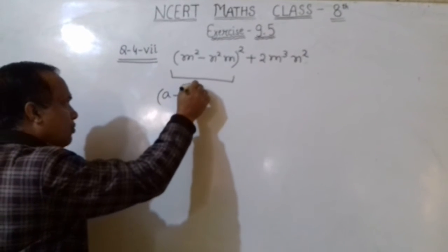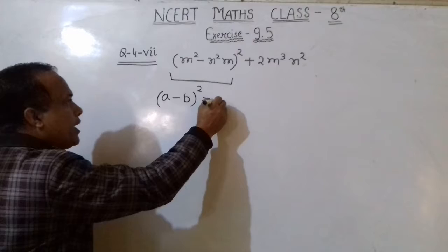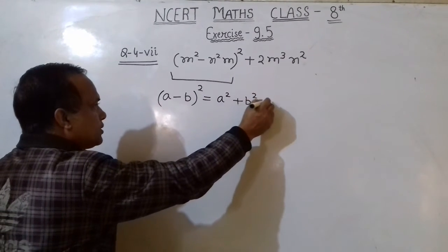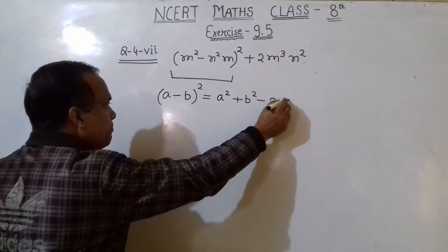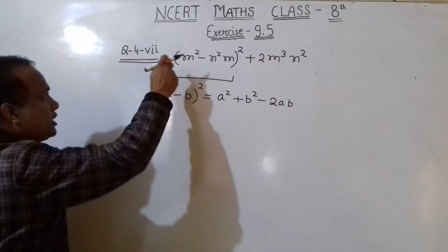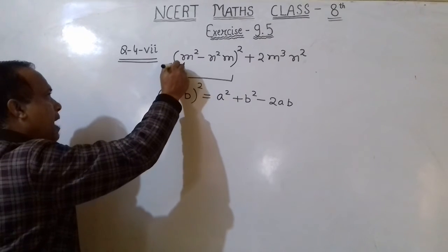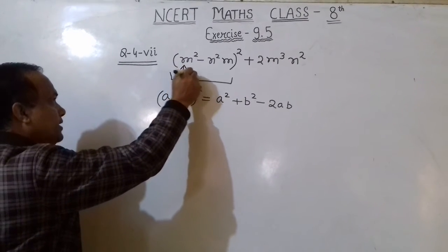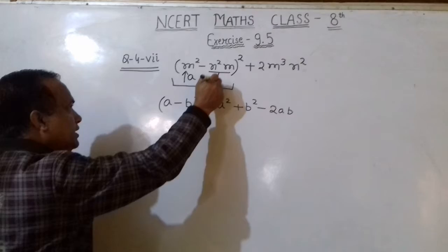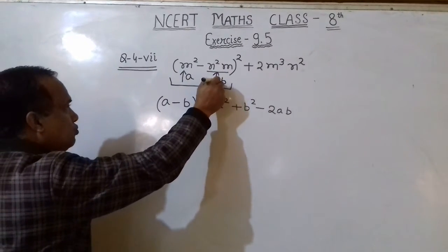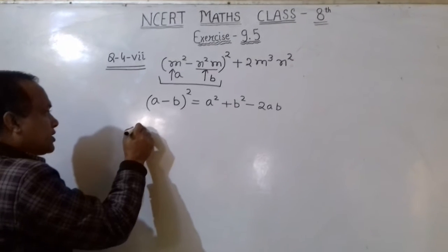Identity (A - B)² is equal to A² + B² - 2AB. So you see here, at the place of A, we get M². And at the place of B, we get N²M. So you use A squared,